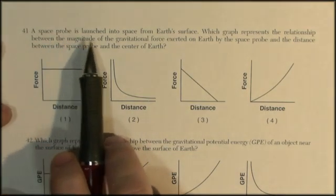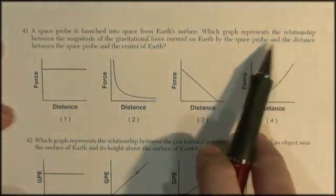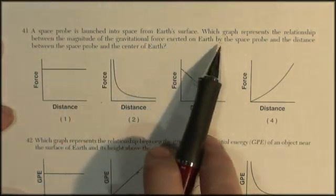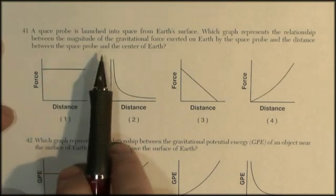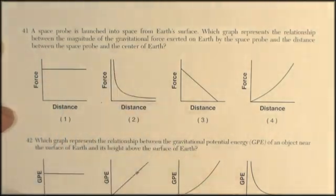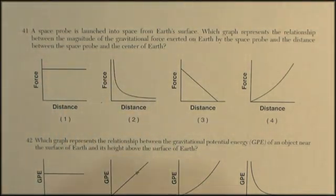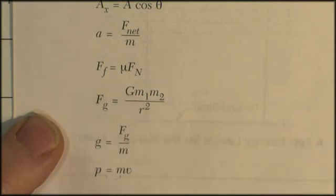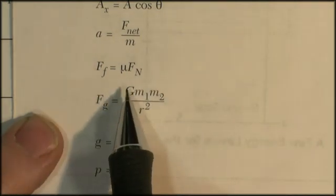In the first one, you've got a space probe that's launched into space. Which graph represents the relationship between the magnitude of the gravitational force exerted on the Earth by the space probe and the distance between the space probe and the center of the Earth? So the first thing to do is to find the equation, and that's right here. And that equation says the force of gravity is equal to G, gravitational constant, mass 1, mass 2, and distance squared. Here's what I'm going to do. I'm not even going to look at the choices. I'm just going to draw it.